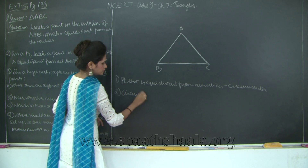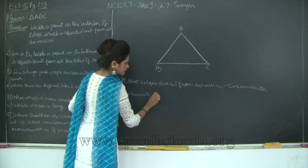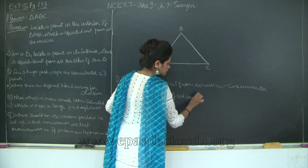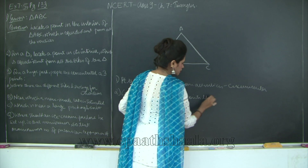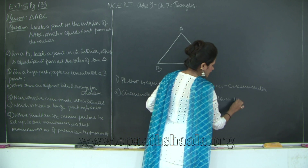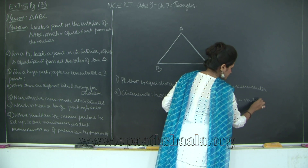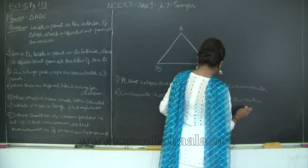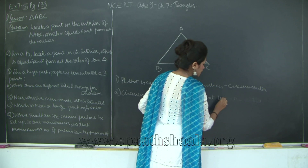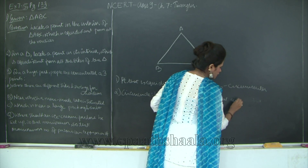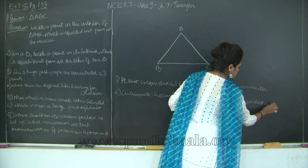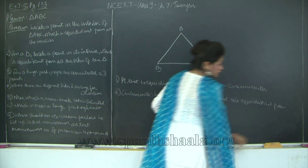The circumcircle is the locus of all points that touch the vertices of the triangle — that is, the locus of all points equidistant from the circumcenter.